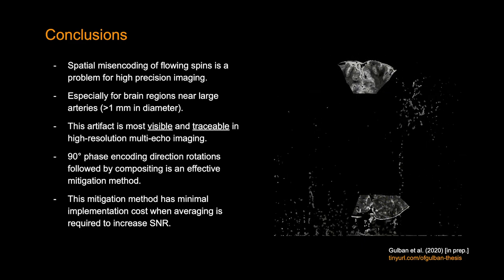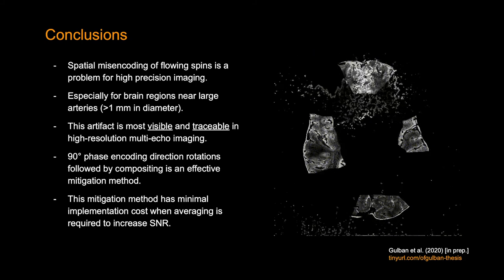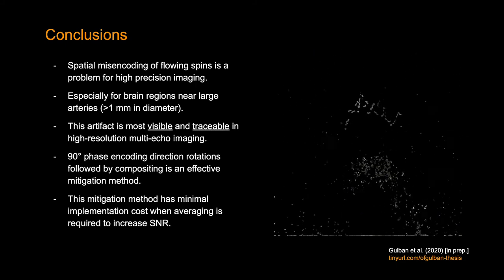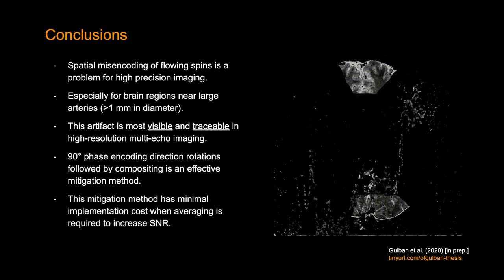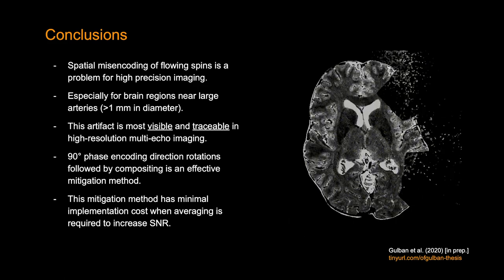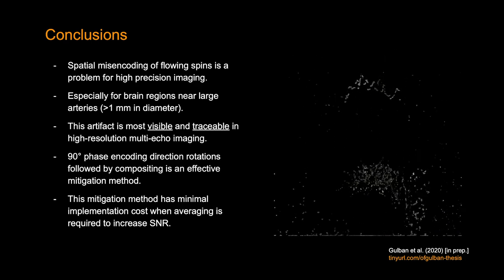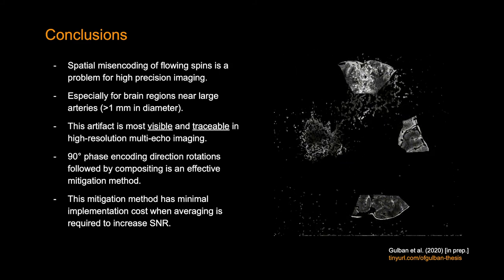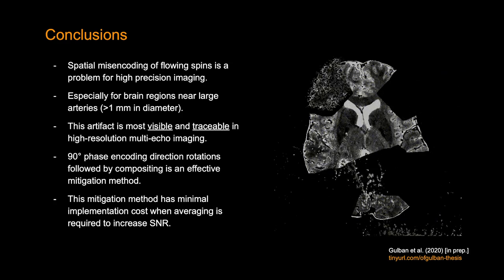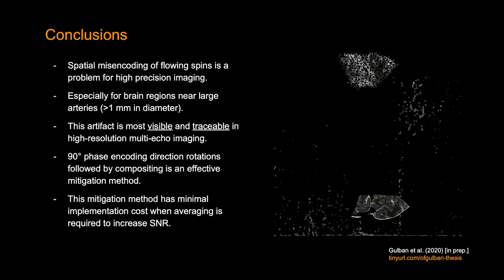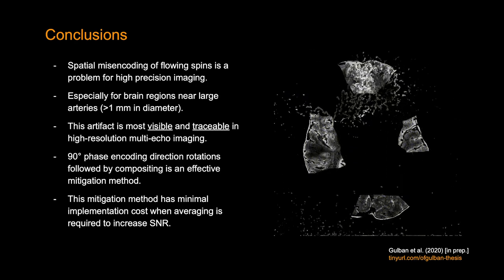As conclusions: the spatial misencoding of flowing spins is a problem for high precision imaging, because T2* fits or any other analysis will be affected by this highly invasive artifact. This artifact is especially relevant for brain regions near large arteries, such as the auditory cortex, but there are also other brain regions near large arteries. This artifact is most visible and traceable in high resolution multi-echo imaging; however, the effects of the same artifact can be seen in other types of images. 90 degree phase encoding direction rotations followed by compositing is an effective mitigation method, and it has minimal implementation cost because you need to acquire multiple images and average them to increase SNR anyway at, for instance, 350 micron isotropic resolution. Thank you.